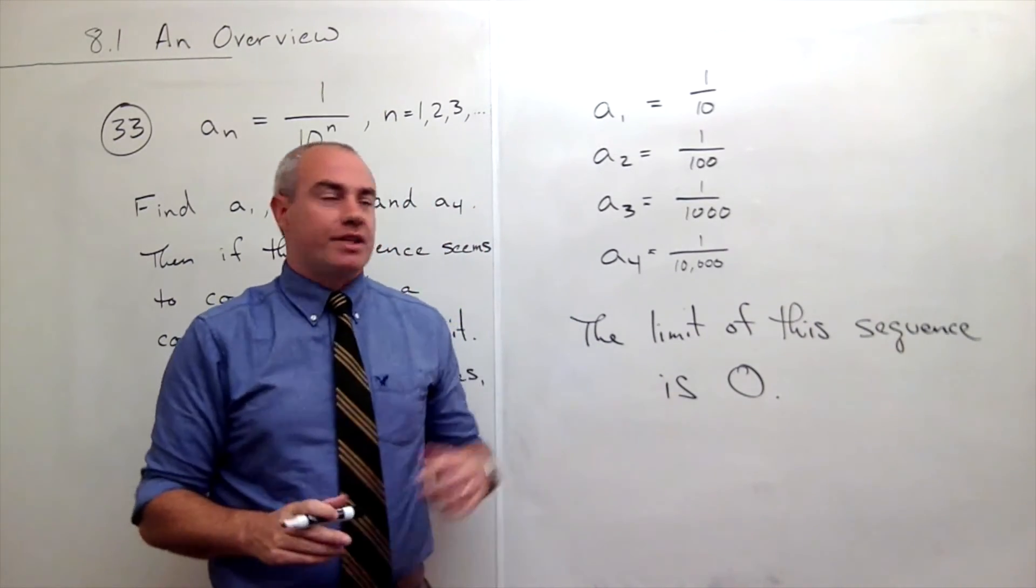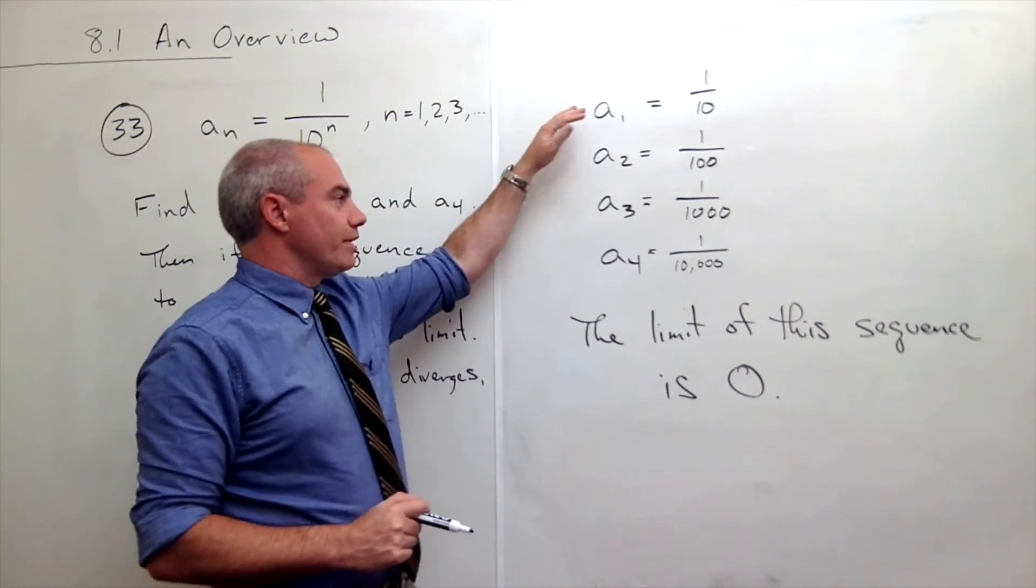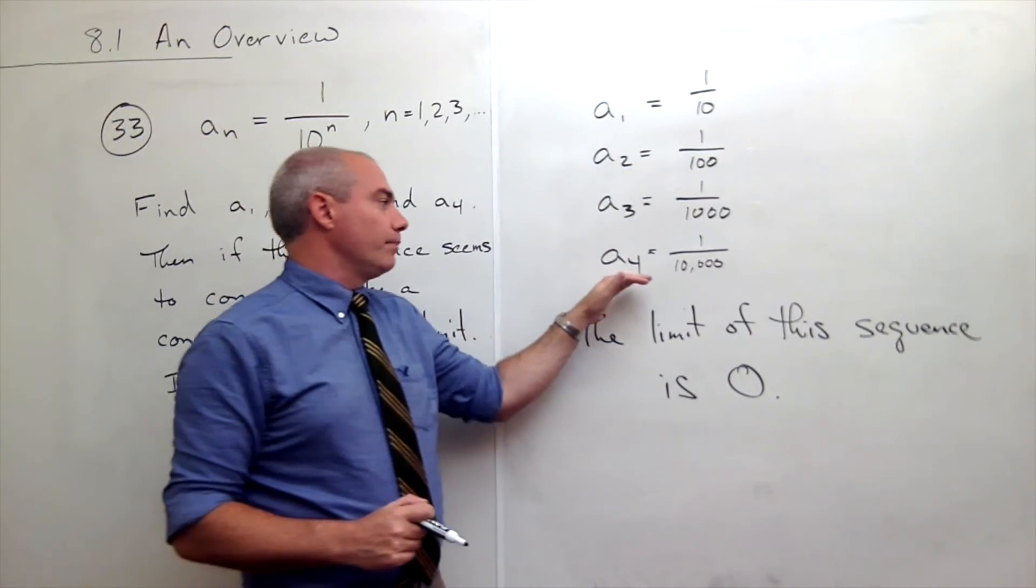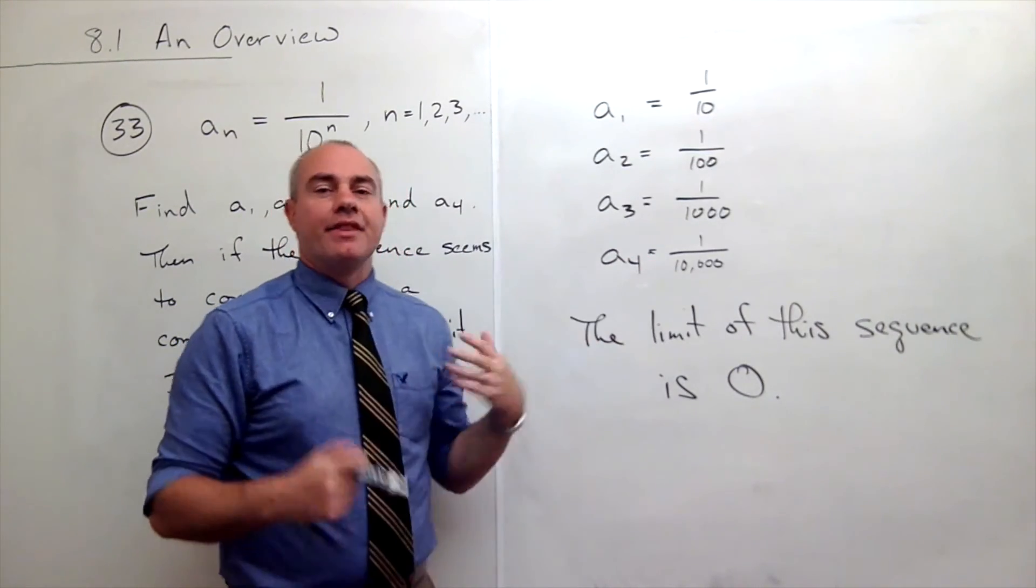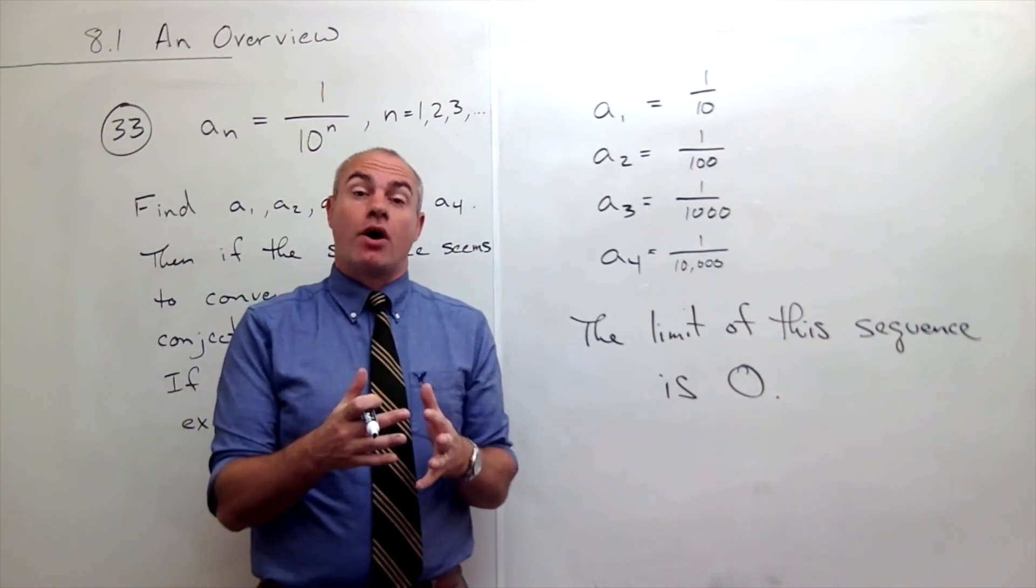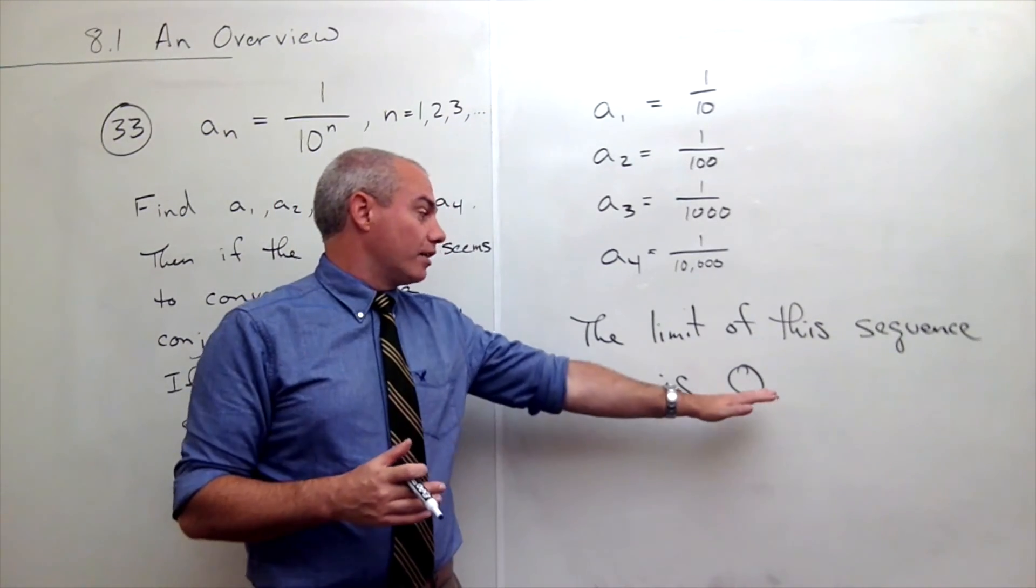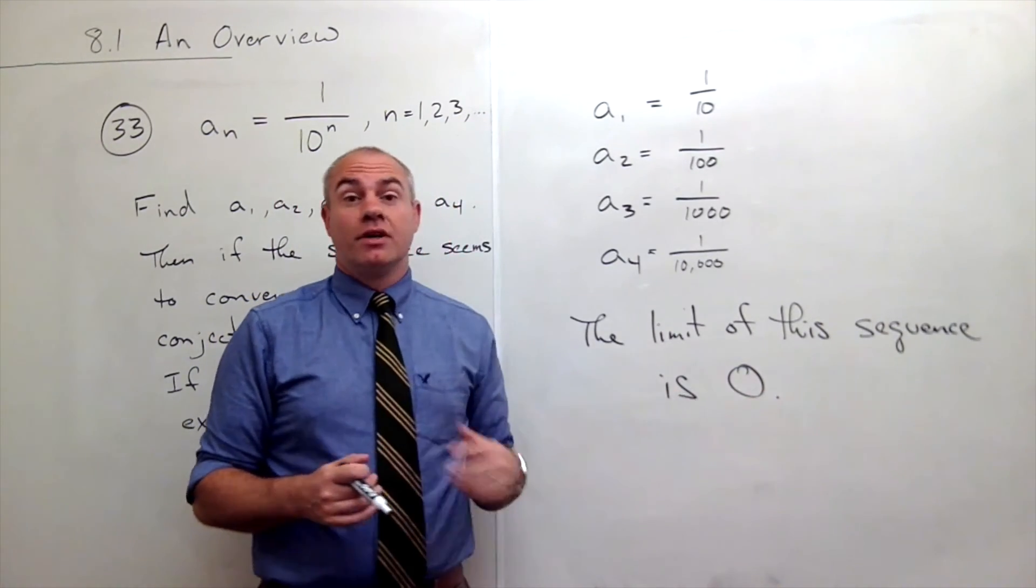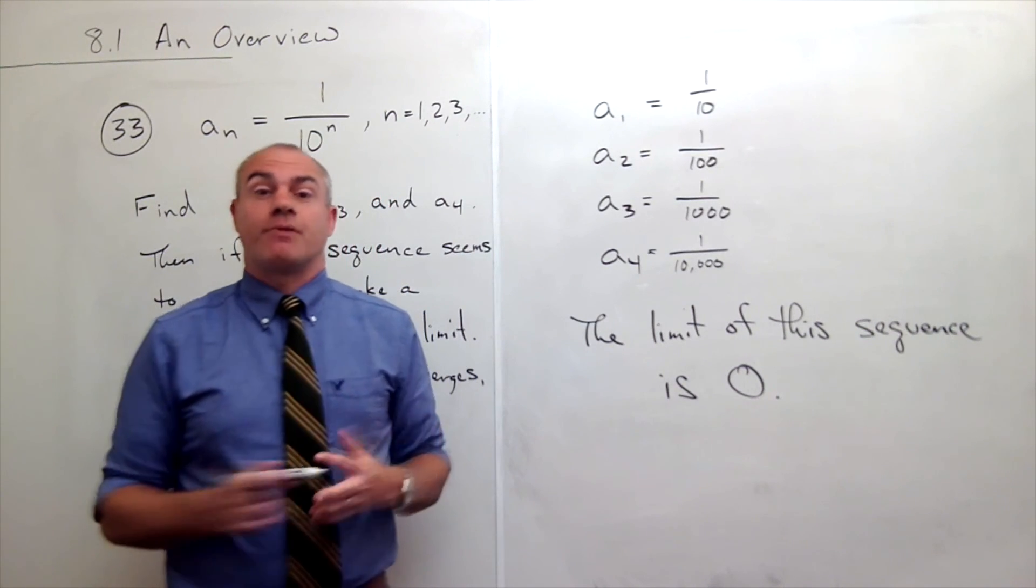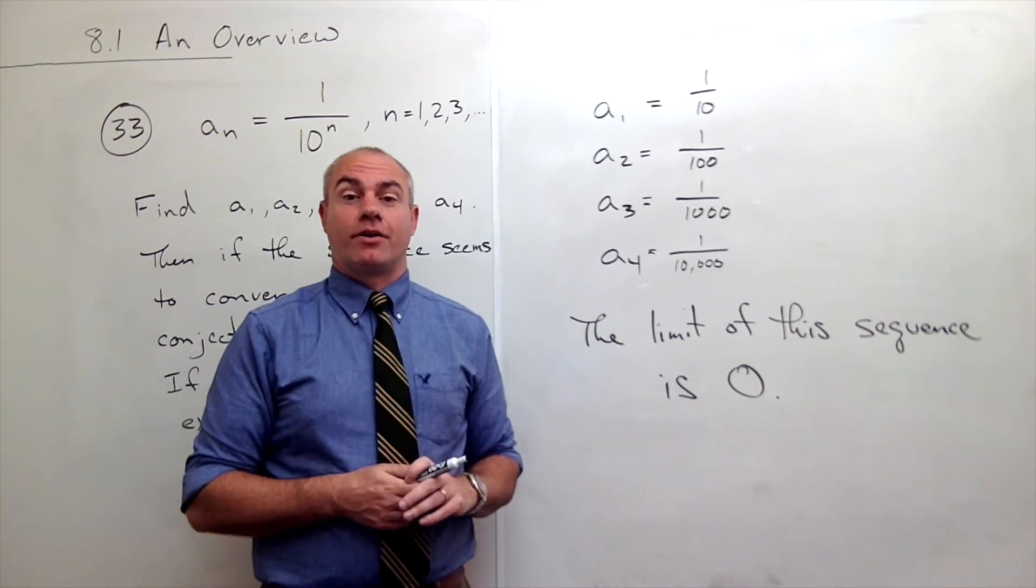So that's what these types of problems are asking you to do: take a look at a little bit of the sequence and then see if we can recognize where it's going. If it's going somewhere, what's it going to? If it's not going anywhere, explain why you can tell it's not going anywhere.